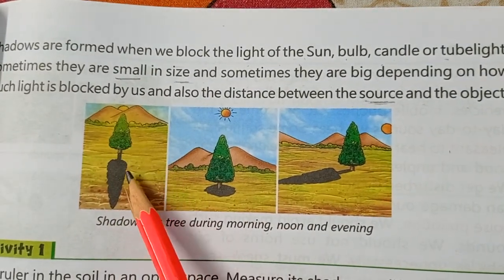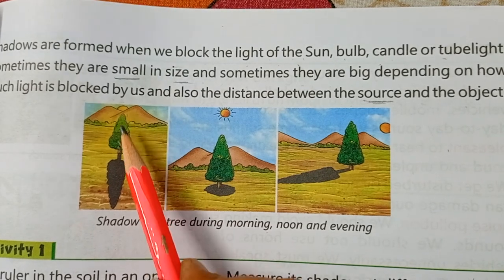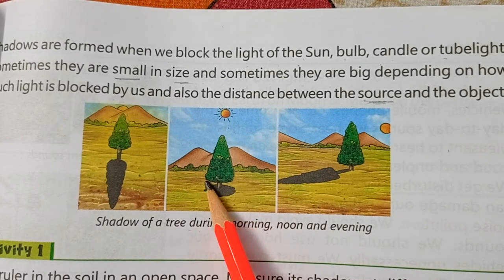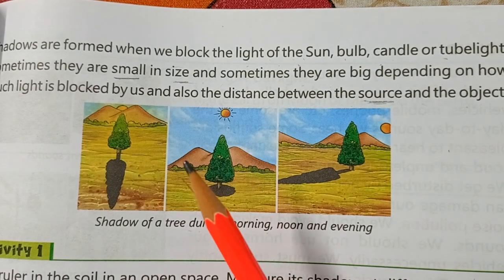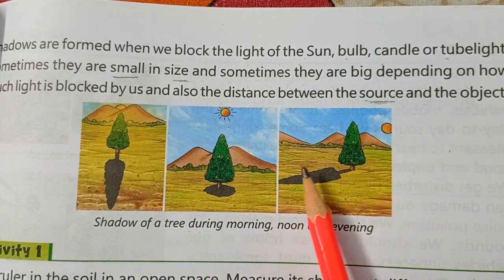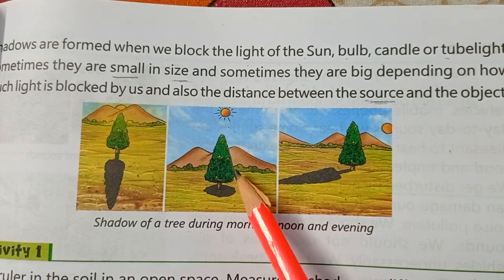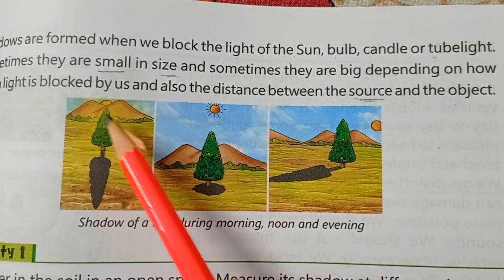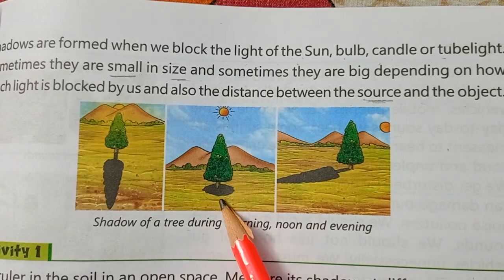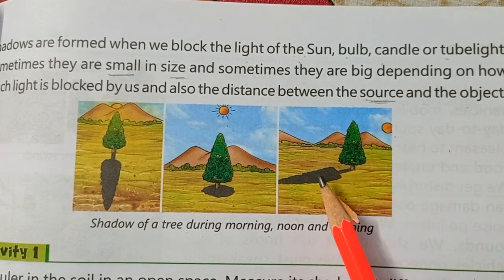Here you can see a picture of a tree. In the morning, the sun is here on one side, so the shadow falls on the other side. At noon, the sun is directly above, so the shadow falls below the tree — that's why we stand under trees in summer. In the evening, light comes from behind, so the shadow forms in front. Shadow is always in the opposite direction of the light source — if light is above, shadow is below; if light is behind, shadow is in front; if light is on the right, shadow is on the left.